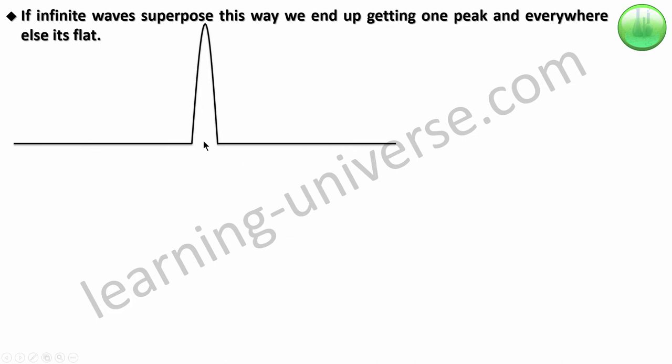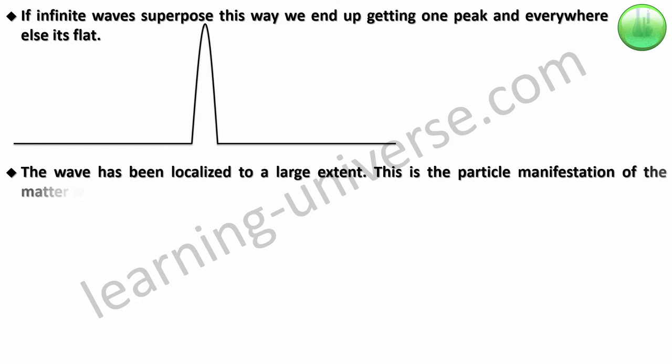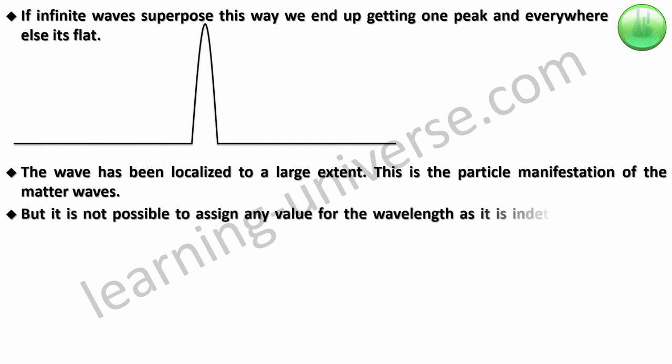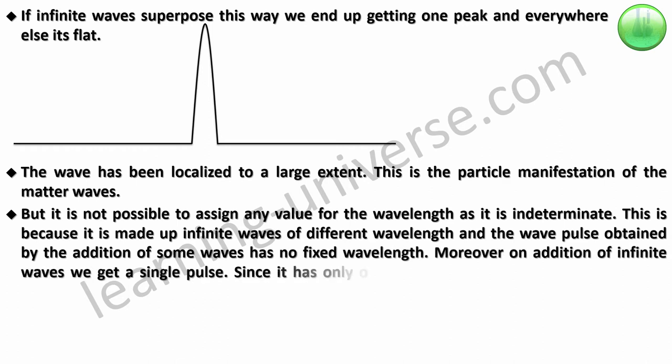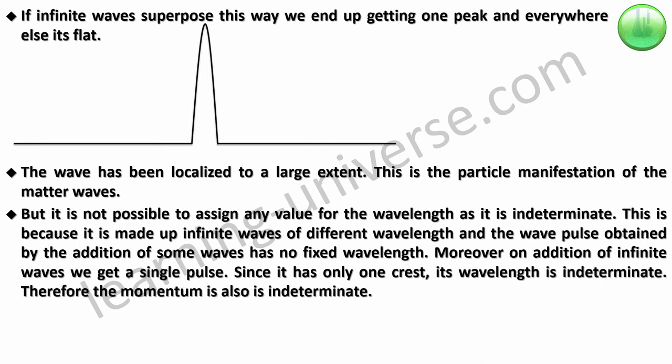If infinite waves superimpose this way, we end up getting one peak and everywhere else it will be completely flat. This is what happens if you superimpose infinite waves in phase. And this spike is the region where the electron can be found. So we are able to localize the electron now. The wave has been localized to a large extent. This is the particle manifestation of the matter waves. But it is not possible to assign any value for the wavelength as it is indeterminate. This is because it is made up of infinite waves of different wavelength. Since it has only one crest and no other crest available, its wavelength is indeterminate. It's not that we cannot determine it. There isn't one. Therefore, the momentum is also as indeterminate as wavelength because they are related by the de Broglie equation.